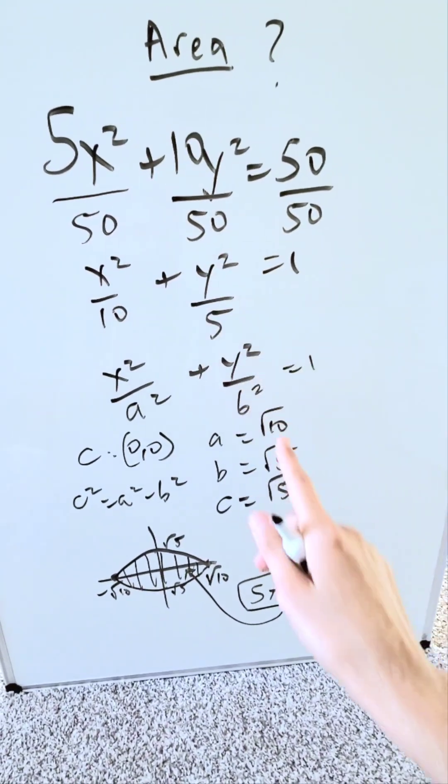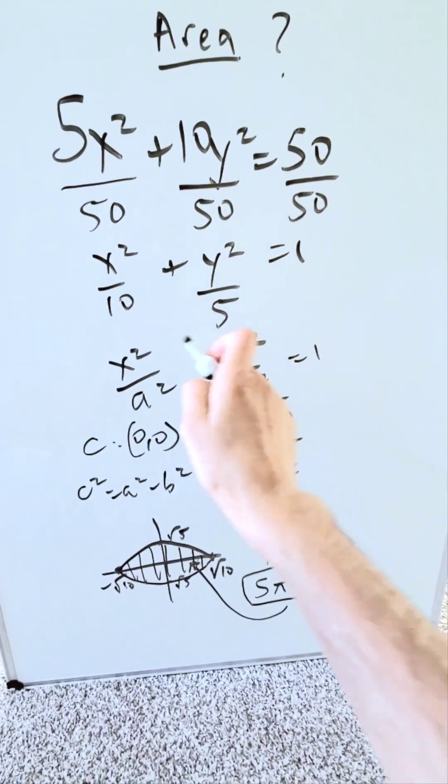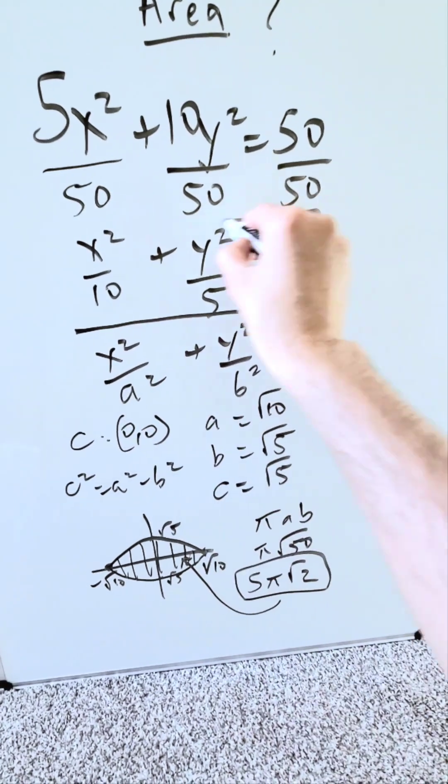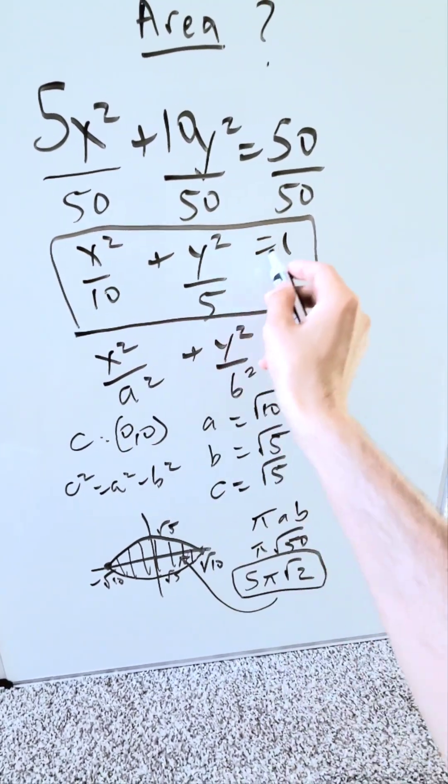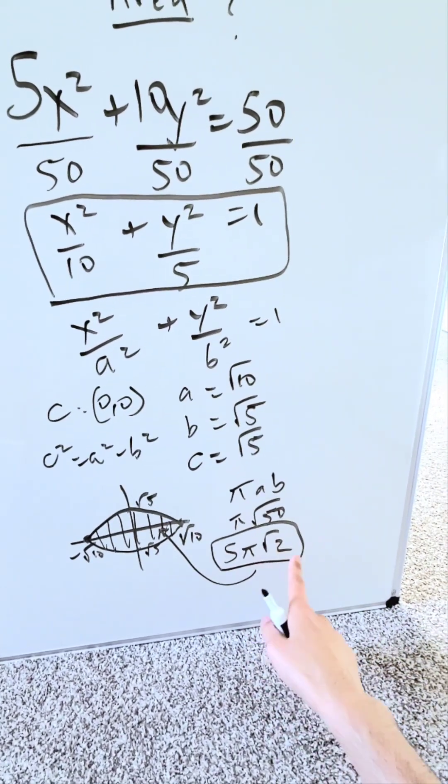Having this equation as you saw, 5x squared plus 10y squared equals 50. Or you can even say this, better yet, x squared over 10 plus y squared over 5 is equal to 1 has the area 5 pi root 2.